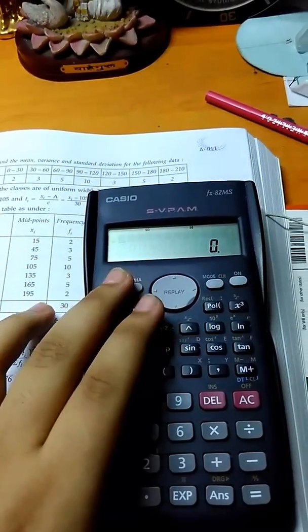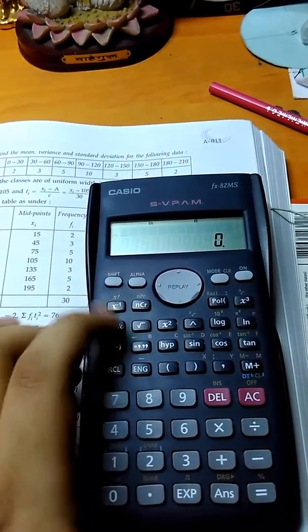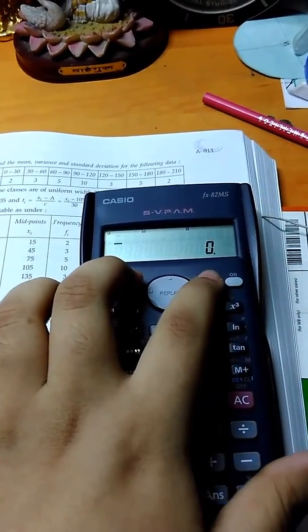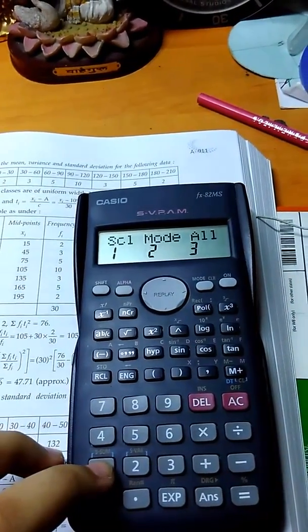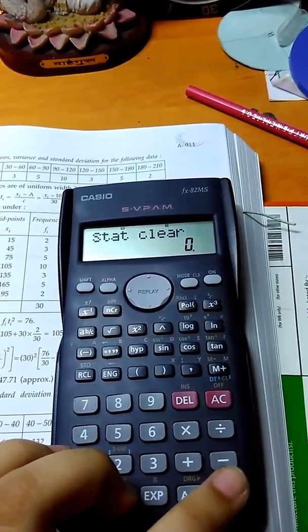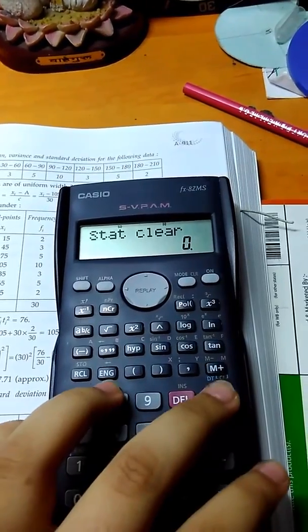First thing you have to do is clear the stat. For that, press shift, clear or mode, and select 1, and then press equal sign. This has cleared the stat.